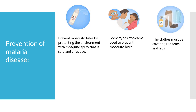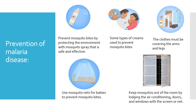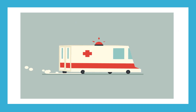Clothes should cover the arms and legs, and a special spray can be applied to your clothing to keep mosquitoes away. Mosquito nets can be used for babies to prevent bites. Inside the home, keep mosquitoes out by using air conditioning and covering doors and windows with screens or nets to prevent mosquitoes from entering.